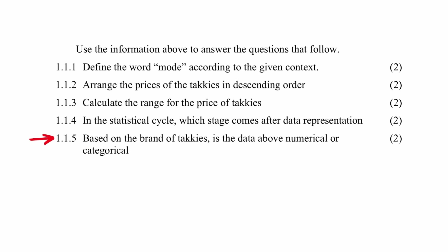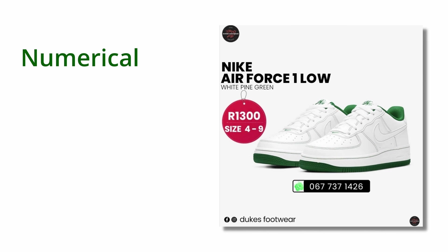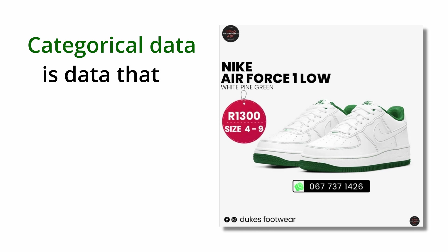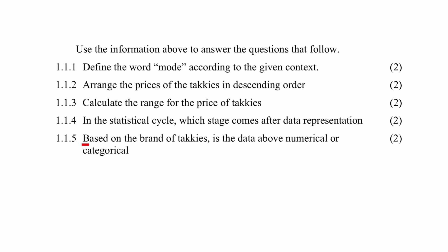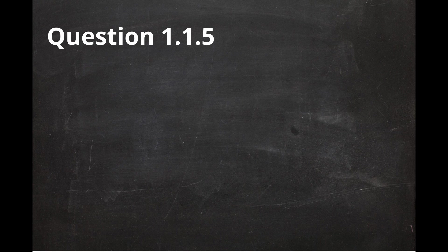In question 1.1.5, you are asked to state whether the above data is numerical data or categorical data, and you have to base your decision on the brand of takkies. Now, numerical data is data that is counted or measured, like the prices of the takkies. Categorical data is data that is divided into groups or categories, like the different brands of takkies or the range of the shoe sizes. Since you are required to make your decision based on the brand of takkies, the data here can be classified as categorical data.